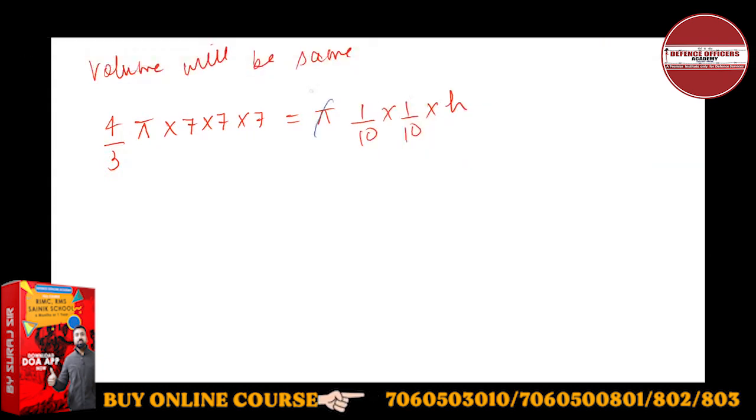I have not put the value, so h will be now 4 × 7 × 7 × 7 upon 3. Just have to solve. I have done cross multiplication. So this will give me h will be - 7 × 4 is 28, into 7 × 7 is 49, into 100 upon 3.